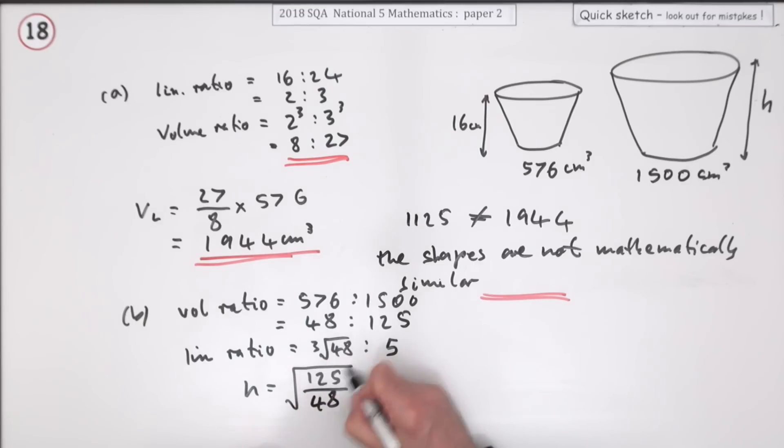It's going to be the cube root of all of that times the 16. You could have put 5 over the cube root of 48 here, or you could have left it as 1500 over 576 here.